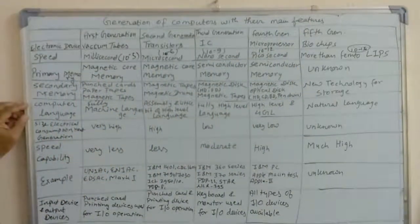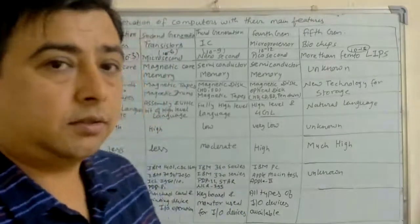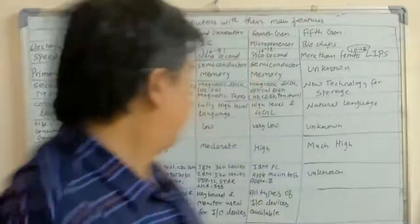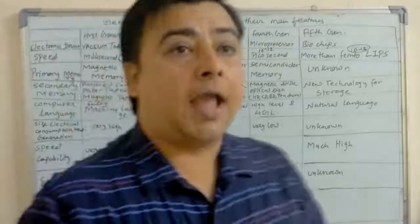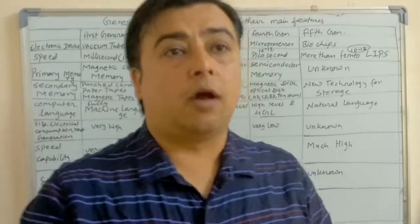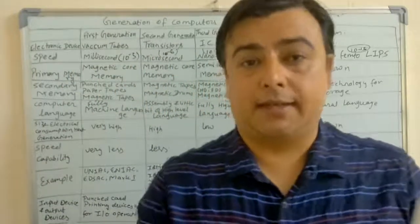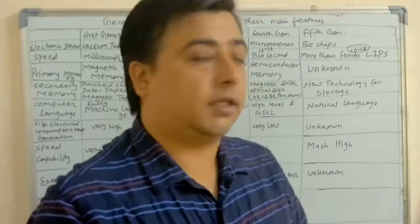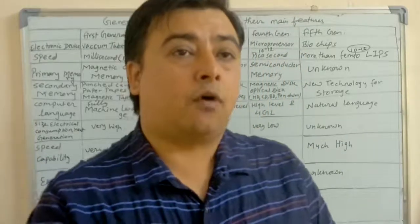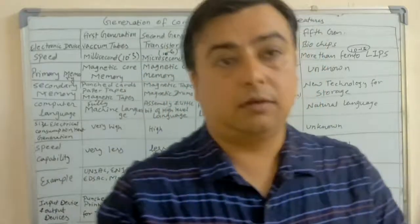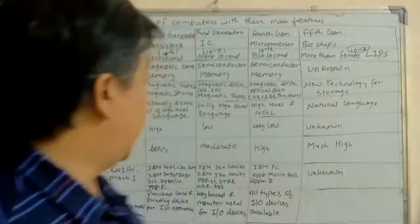Regarding control language: in the first generation, fully machine-level language was used. In the second generation, assembly language as well as a little bit of high-level language was used — COBOL (Common Business Oriented Language) and FORTRAN (Formula Translation) were used to simplify programming in the second generation.